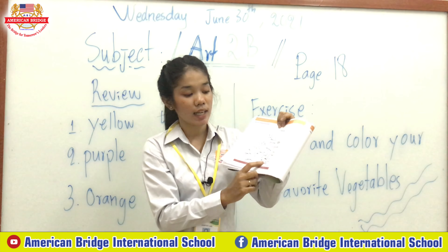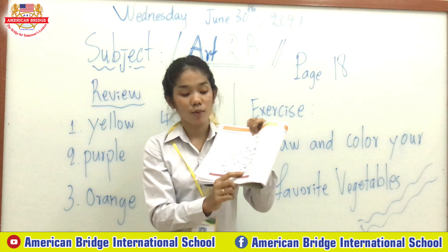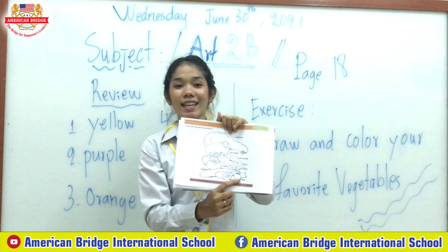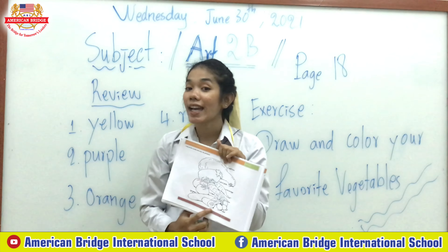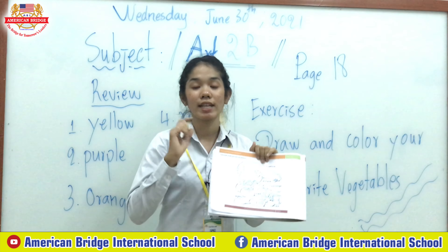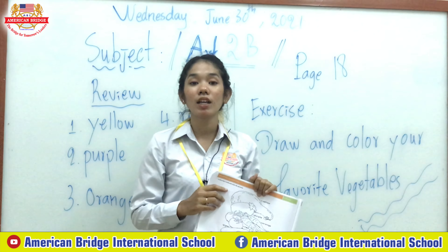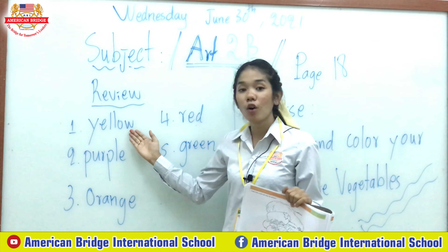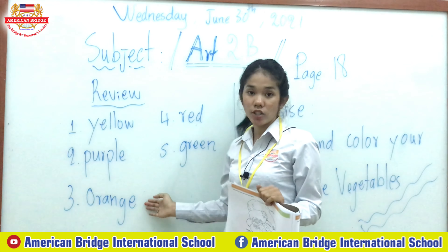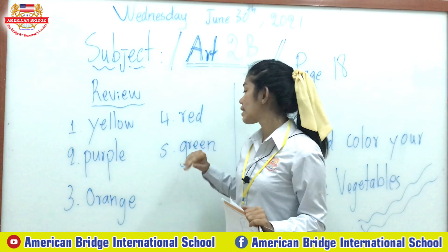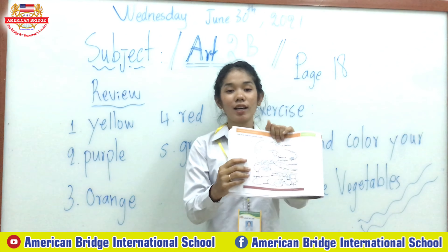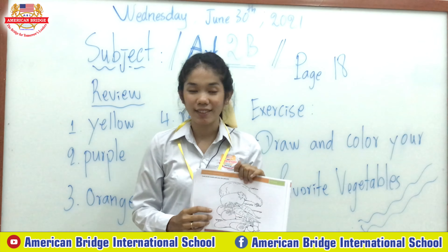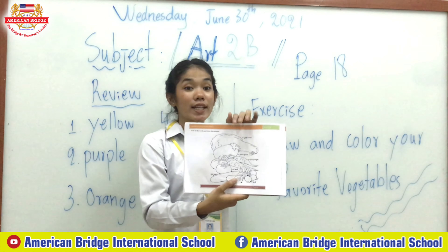That is red, right everyone? Great. So now you can do it — choose five colors: yellow, purple, orange, red, and green to color our picture. Okay everyone, great.